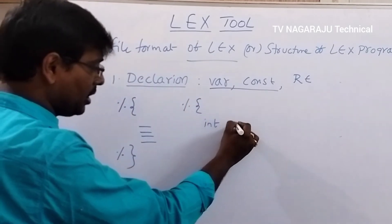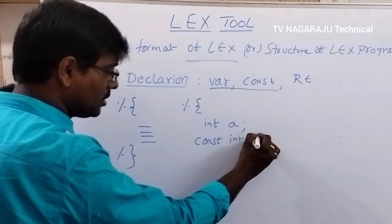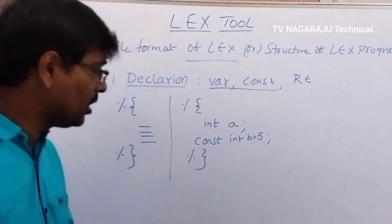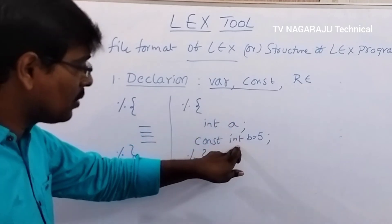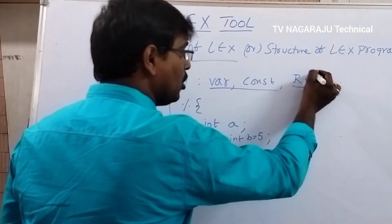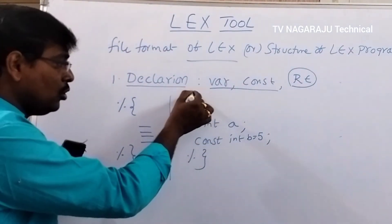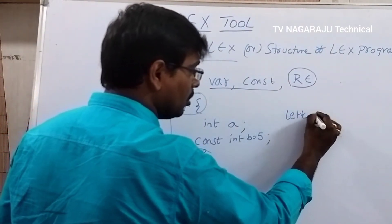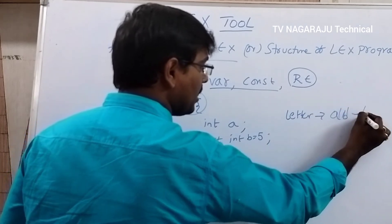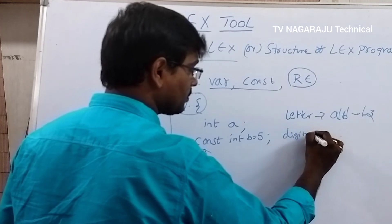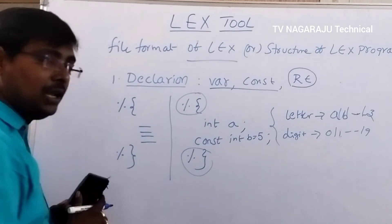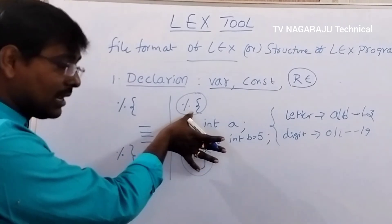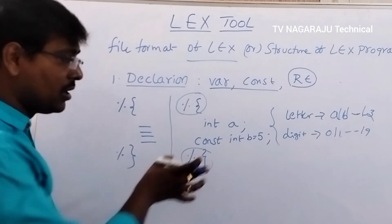Remember: if it is a regular expression, there is no need to use the percent-curly brackets. For example, you can simply write: 'letter = [a-z...z]' and 'digit = [0-9]' without any percent-curly brackets. This is the way to write declarations of variables, constants, and regular expressions in the Lex program.